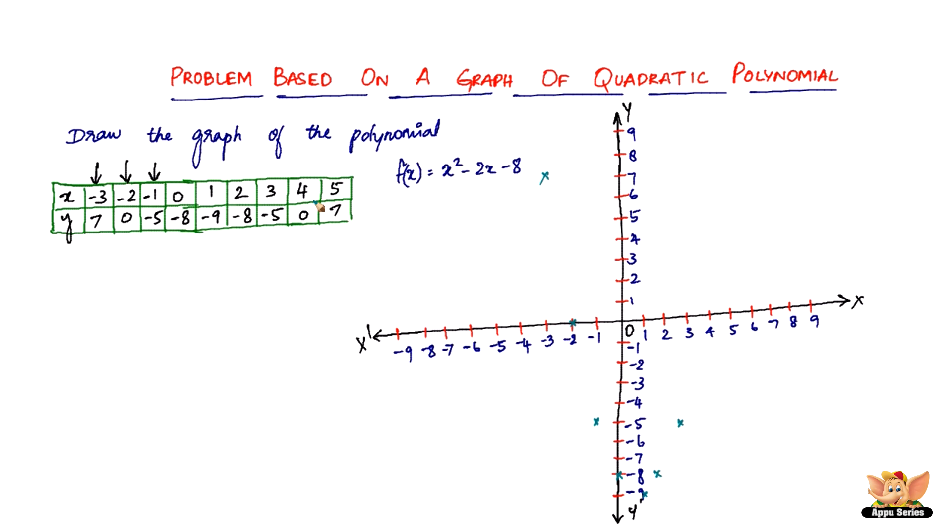4 on the x and 0 on the y. So 4 on the x, 0 on the y. And 5 on the x, 7 on the y is finally here.